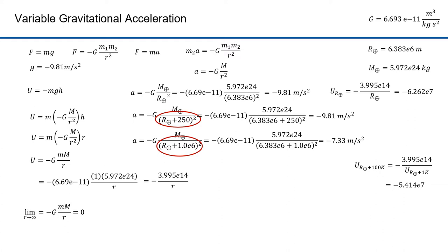The limit as r approaches infinity of G M m over r equals zero, since r goes to infinity in the denominator. That means the gravitational potential energy is zero at infinity — infinity is the zero reference point, which is the convention for gravitational energy. If a rolling ball is on ramps, the zero point for potential energy could be any arbitrary point. In a gravitational field, however, we set the zero point at infinity, so everything below that — literally everything — is negative. Hence gravitational potential energy is always negative.